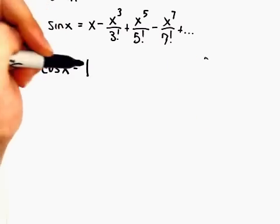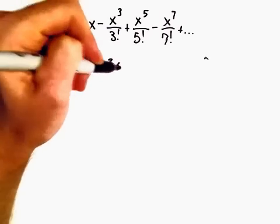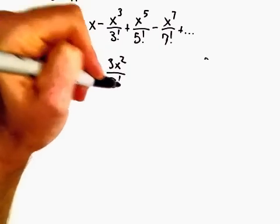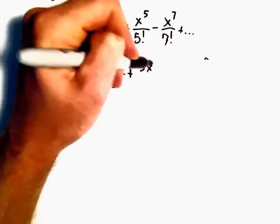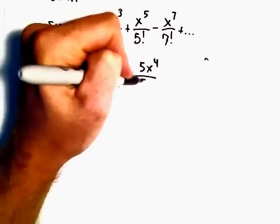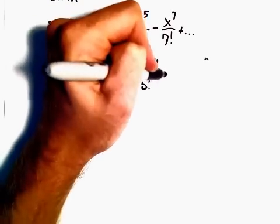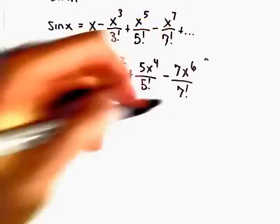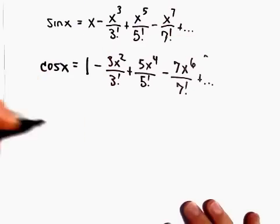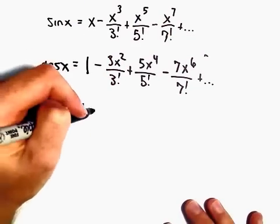The derivative of x will be 1. Then we'll get 3x squared over 3 factorial plus 5x to the fourth over 5 factorial minus 7x to the sixth over 7 factorial, etc. We can simplify this.